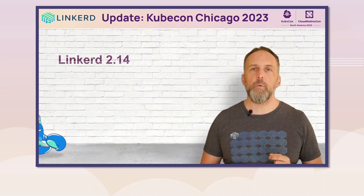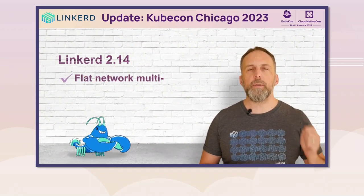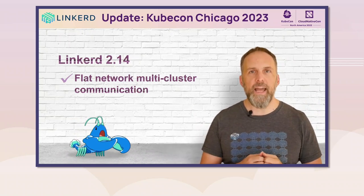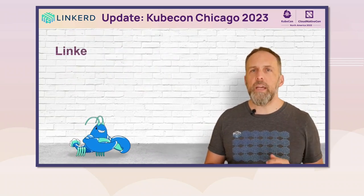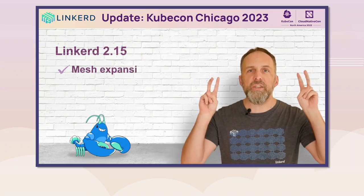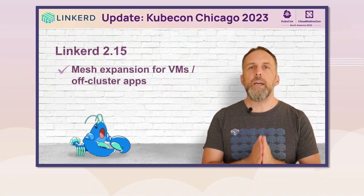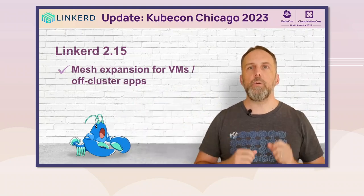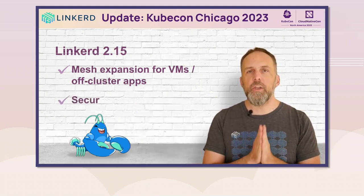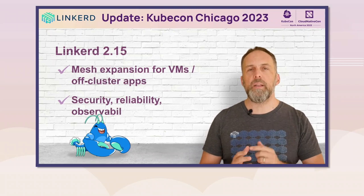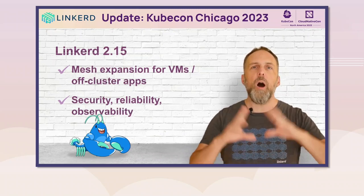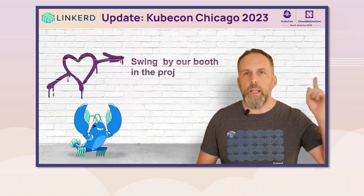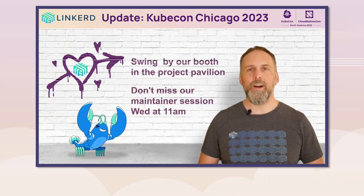Two big exciting updates from Linkerd land. The first is Linkerd 2.14, which adds the ability to do direct pod-to-pod multi-cluster communication for clusters on a shared flat network. The second is Linkerd 2.15, which adds mesh expansion — the ability for Linkerd to add applications running on VMs or outside of the cluster into the mesh and provide the same security, reliability, and observability guarantees that Linkerd provides to all applications running inside your Kubernetes cluster. Thank you very much. Linkerd forever, and please enjoy the conference.